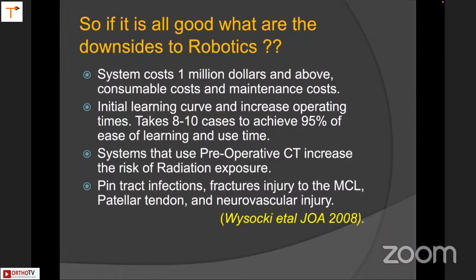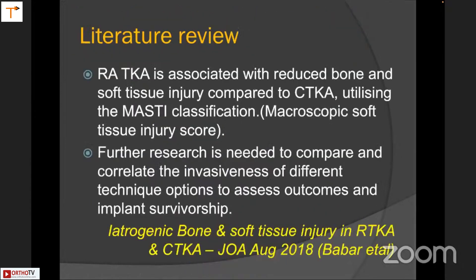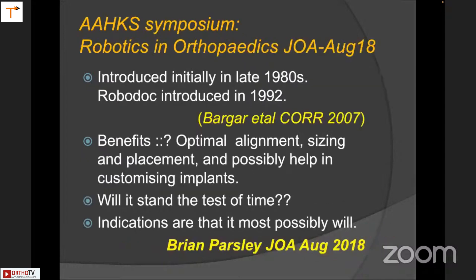Robotics has its downsides: cost, radiation exposure from CT scans, pin tract infections, neurovascular injuries, and injuries to the patellar tendon. There is a learning curve — typically six to ten cases before you become reasonably comfortable. Soft tissue injuries, classified by the MAST score (macroscopic soft tissue injury score), are obviously reduced with robotic approaches. At a recent symposium on robotics at ARCOS in 2018, Brian Parsley was one of the speakers.